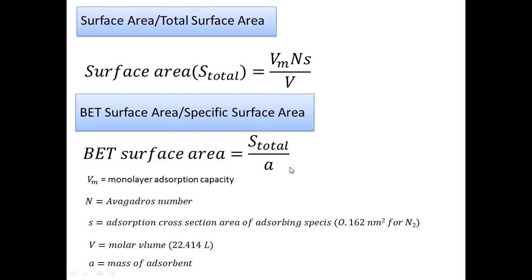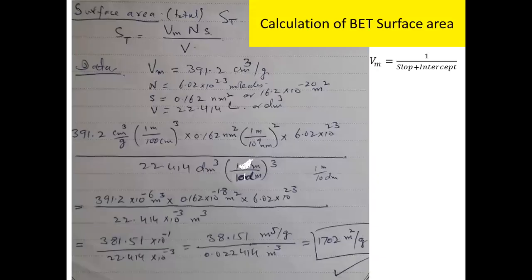More appropriately we use the BET surface area, because dividing by the mass of the adsorbent gives you the surface area per gram. This calculation is very important in nanotechnology and nanomaterials — when you synthesize nanomaterials, surface area is critical. The BET adsorption isotherm technique allows you to calculate the surface area of the adsorbent, and this is the key application of this isotherm.